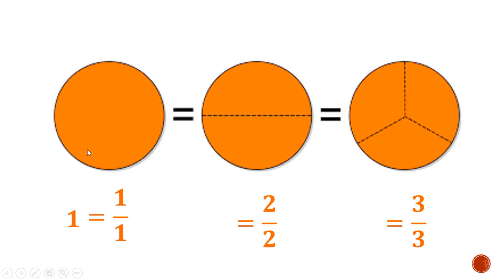Considering the leftmost circle: the circle is not divided into any parts — it's the same as saying it is divided into 1 part, so the denominator is 1. How many of those 1 parts do we have? We have 1. So 1 over 1 is a fraction that can be used to represent 1. The whole number 1 is the same as the fraction 1 over 1.